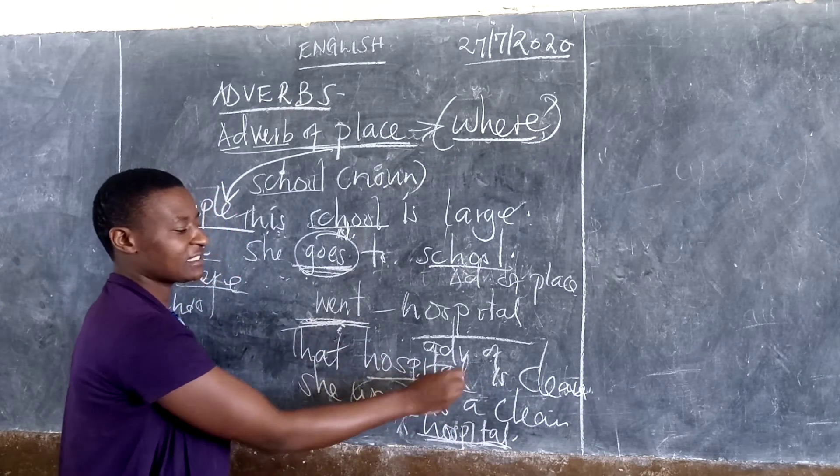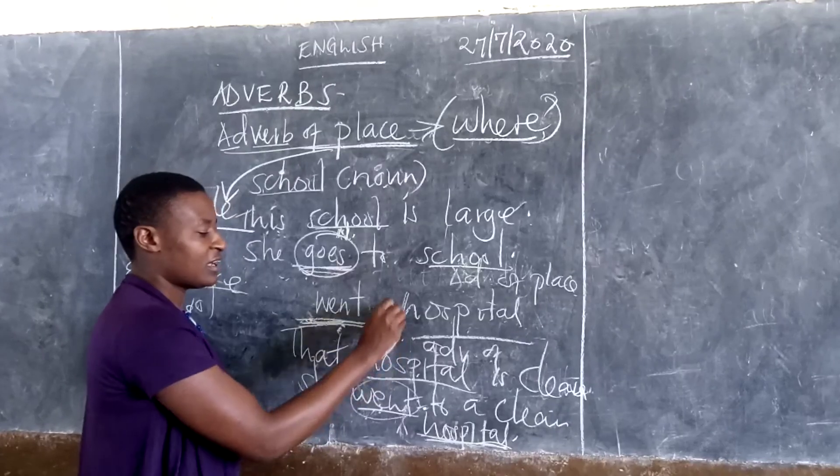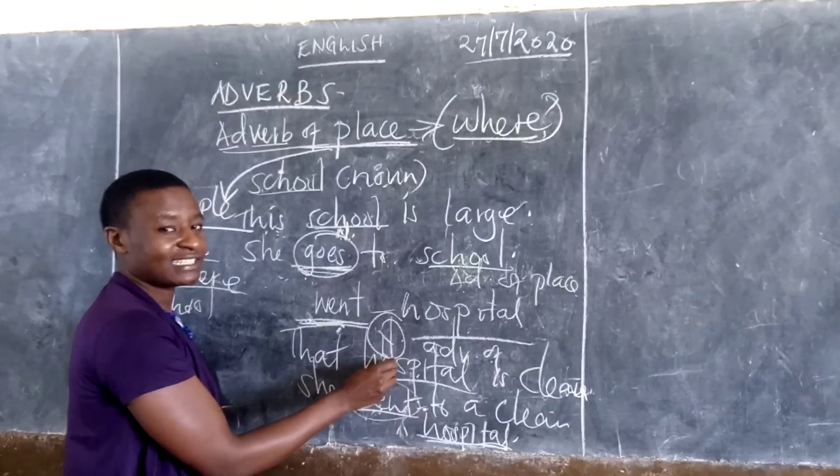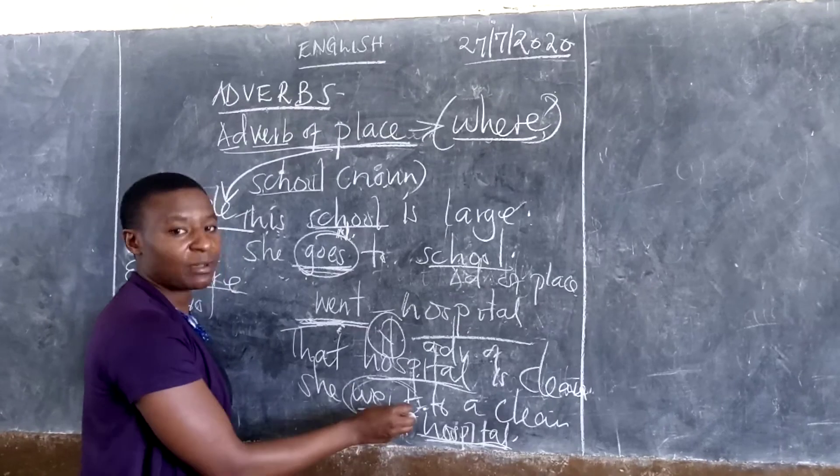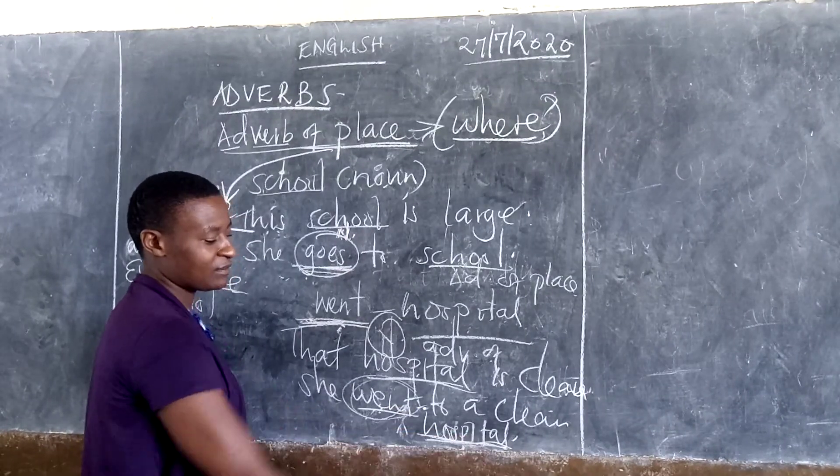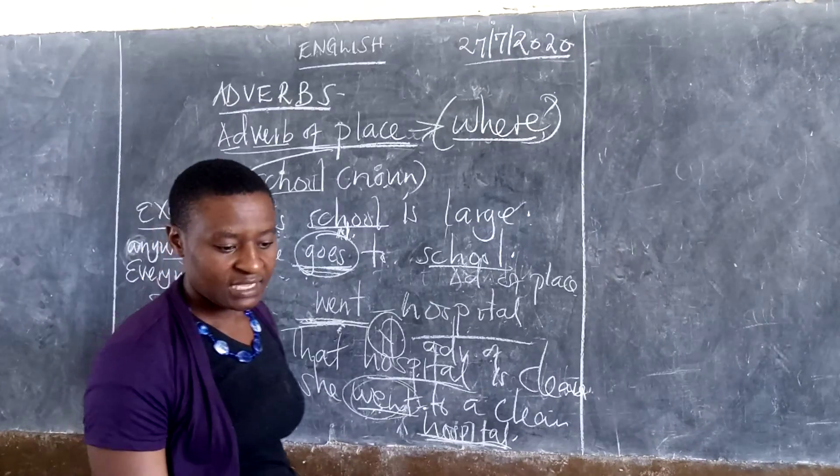But that hospital is clean. This one is, that place is clean. This one is a noun. A name of a person, place of thing. So in this context, in this sentence, this one is a noun. But when it comes to this one, when a verb appears first, then it becomes an adverb of place. Children, that marks the end of our today's lesson.